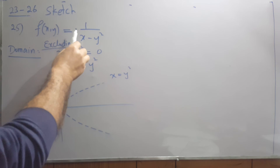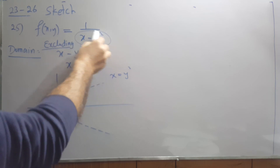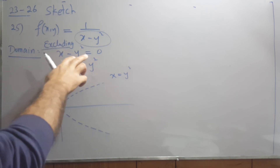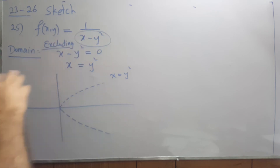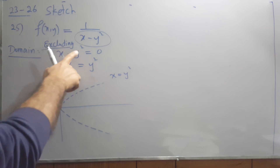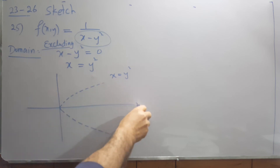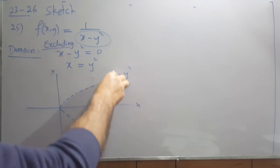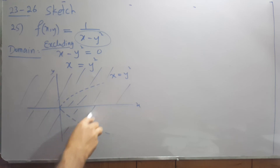For the function 1/(x − y)², the domain is all points except those where the denominator is zero. We exclude all points where (x − y)² = 0, which gives x = y, or equivalently x = y², which is a parabola. So we exclude the parabola — all points on the parabola are not included — and the rest of the plane is included.